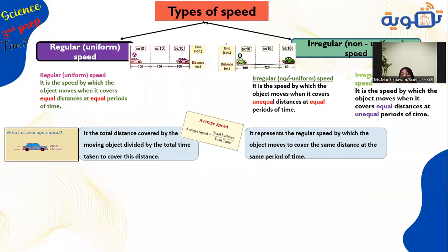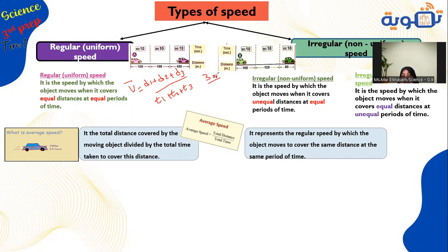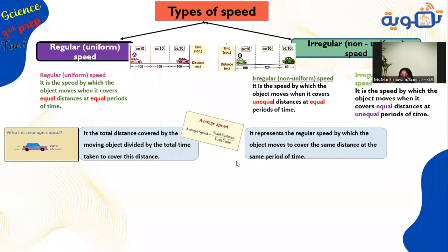Applying the average speed formula: v-average equals d1 + d2 + d3 over t1 + t2 + t3. For example, 100 + 100 + 100 over 10 + 10 + 10 equals 300 over 30 equals 10 m/s — the same value we calculated for uniform speed at each interval. This confirms that average speed equals the regular speed when a body moves with uniform speed.